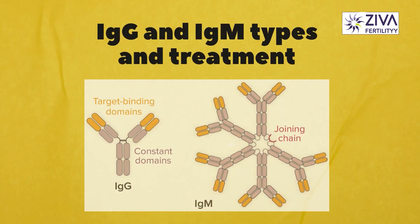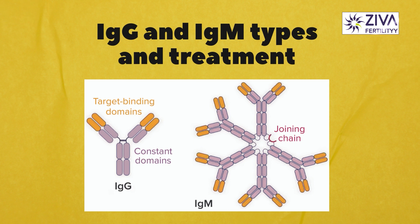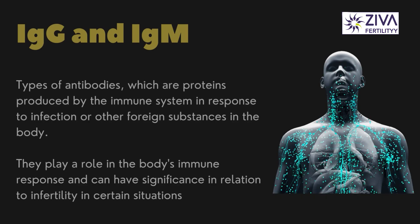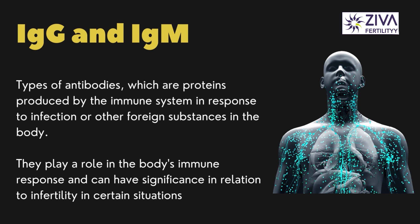IgG and IgM are proteins that are produced by our immune system during an infection. If there is any infection or foreign substance in the body, then IgG and IgM are produced. These are proteins and they play a very important role in the immune response.